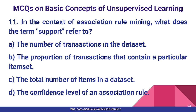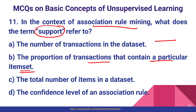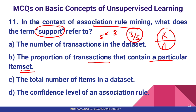Question number eleven: in the context of association rule mining, what does the term support refer to? Support is the ratio of transactions that contain a particular itemset. For example, if total transactions are n and k transactions contain a particular item, then k divided by n is the support. For instance, if you go five times to a dairy shop and purchase bread three times, then three divided by five is the support value of bread. Option B is correct.